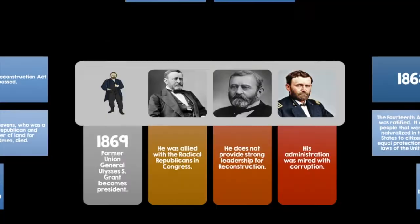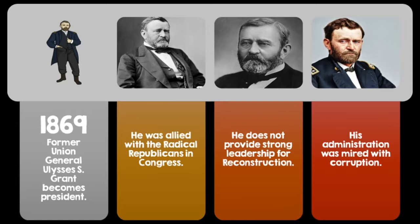In 1869, former Union General Ulysses S. Grant became president. He was allied with the radical Republicans in Congress, but he didn't have strong leadership for Reconstruction, and his administration was mired with corruption and scandal.